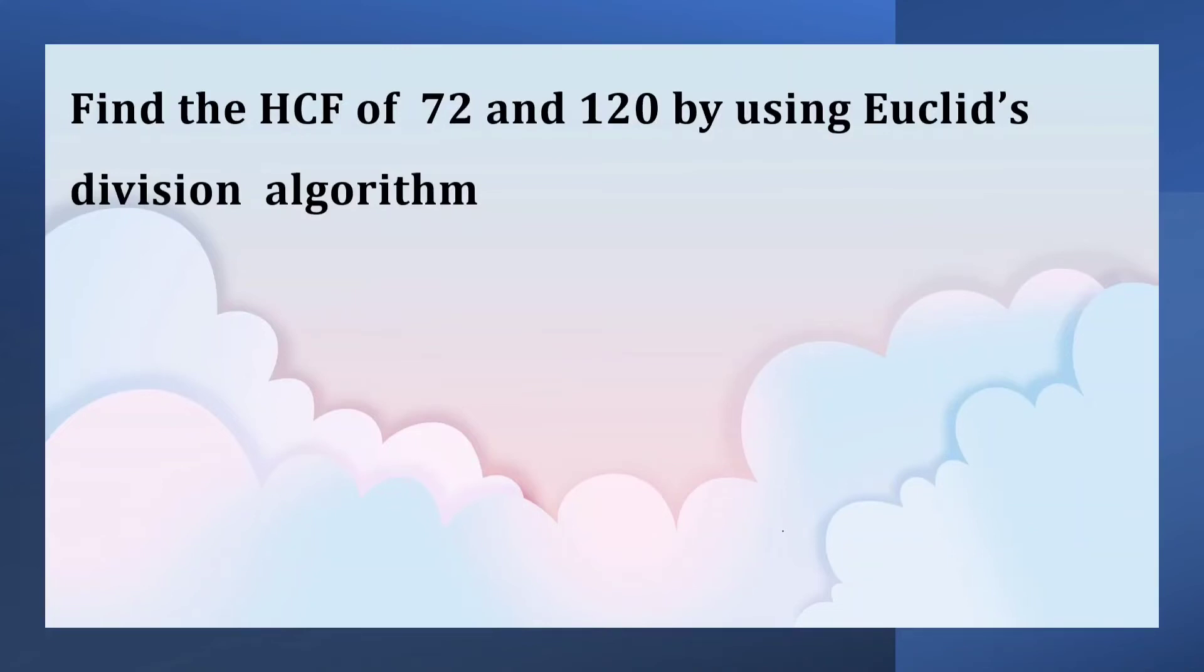Find the HCF of 72 and 120 by using Euclid's division algorithm. According to Euclid's division algorithm, A is equal to BQ plus R. Here Q is quotient, R is remainder.